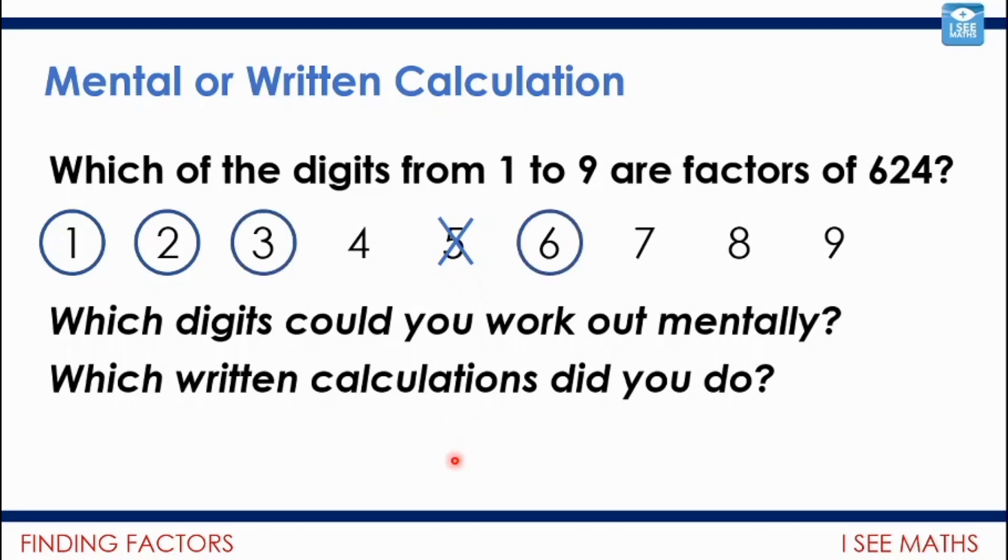Now, actually, I know that 3 and 6 both must be. Let me start actually with 6. 6 multiplied by 100 is 600. And then 4 more 6s gets me to 624. So 6 must be a factor. And if 6 is a factor, I know that 3 must be a factor. Because 2 3s go into 6.